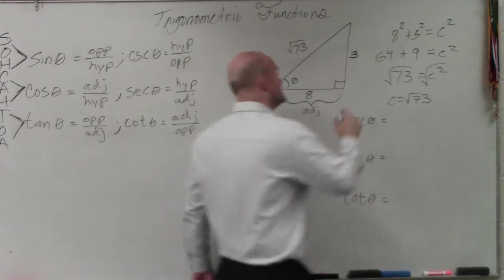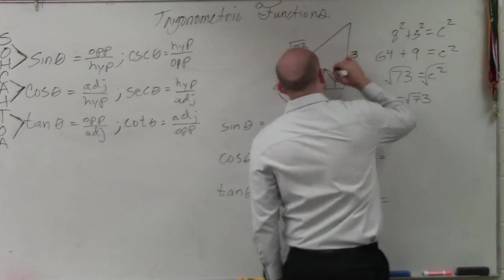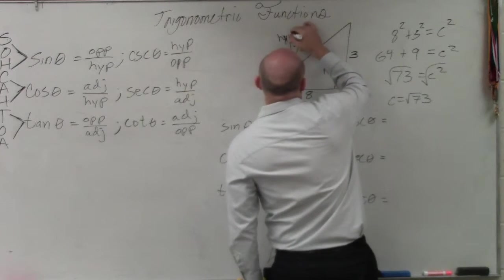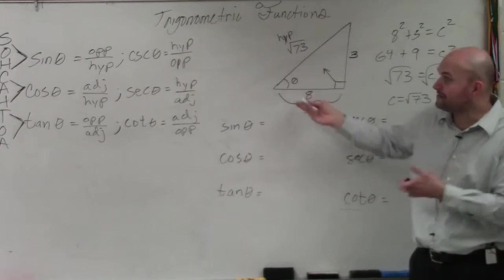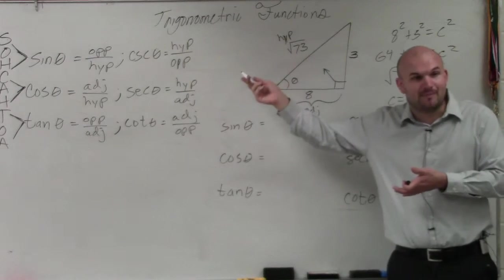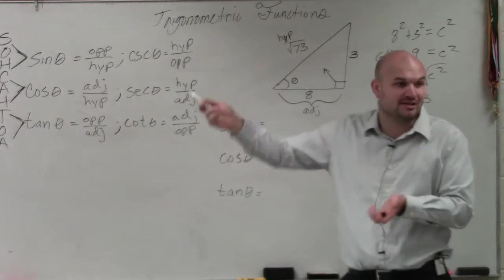The side that is directly across from the 90 degree angle is your hypotenuse. Well, there's only three sides of a triangle. So if you found out adjacent and you found out hypotenuse, by process of elimination,